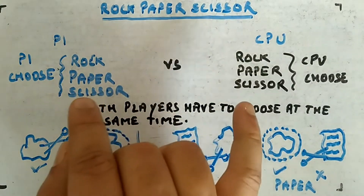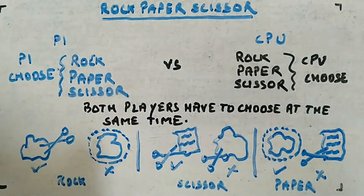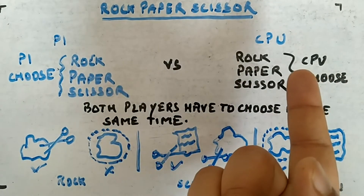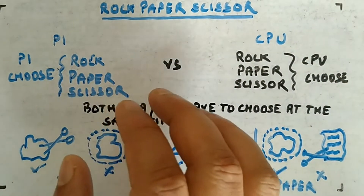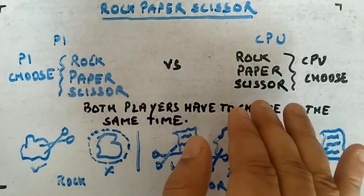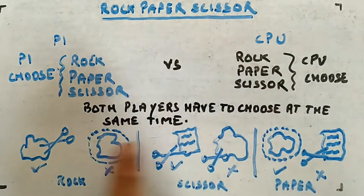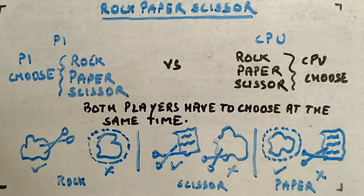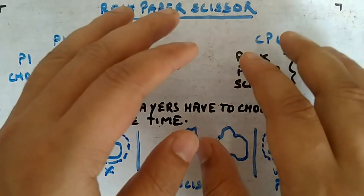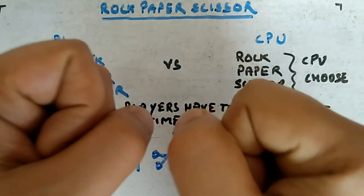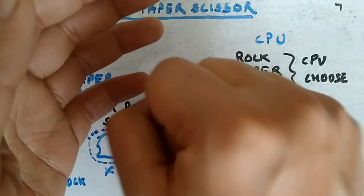Two players choose simultaneously, and depending on the result, a winner is determined. If both choose the same thing - like both choose rock - it's a tie and you have to play again. The same goes for paper and scissor. If they are different, the result is based on the win/loss conditions.